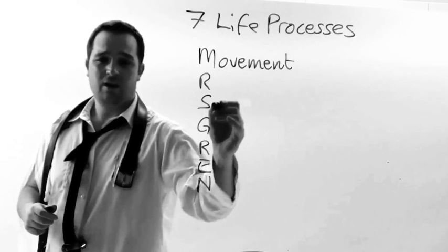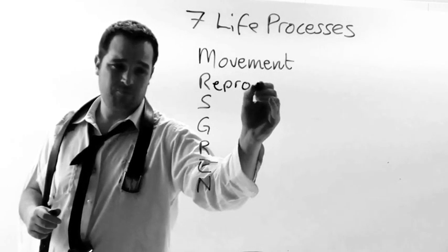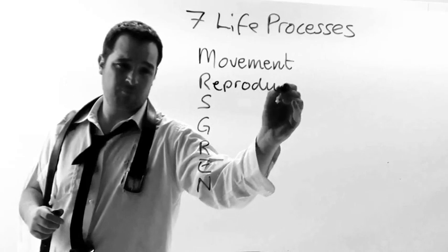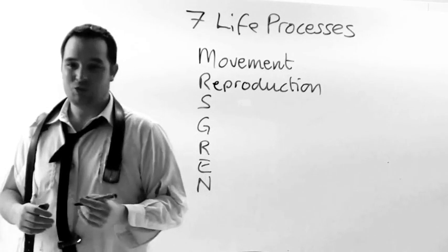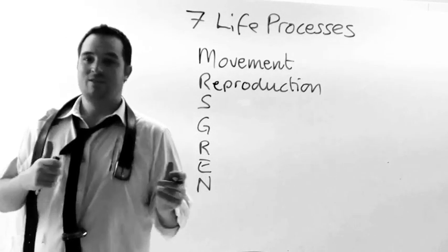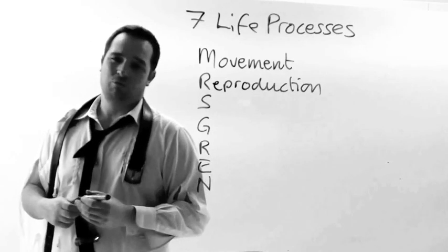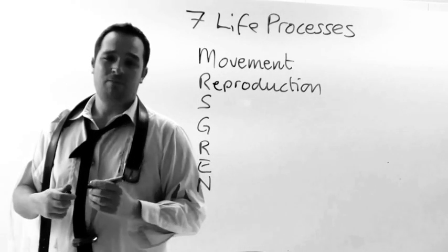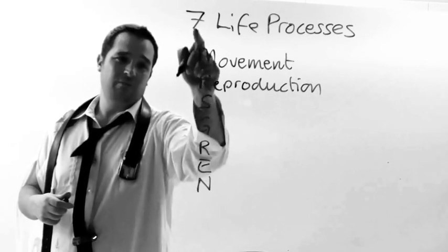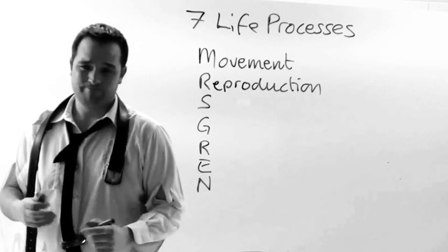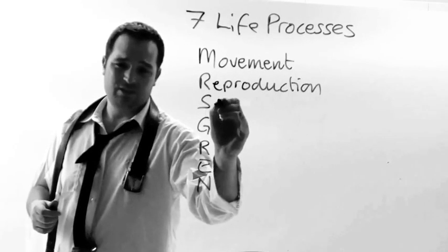The R stands for reproduction. This can be sexual reproduction or asexual reproduction. Any form of producing offspring is one of the seven life processes.